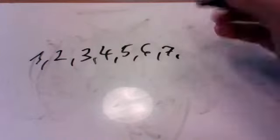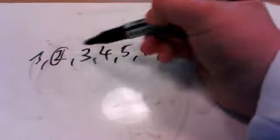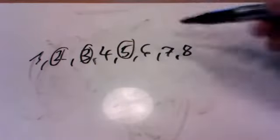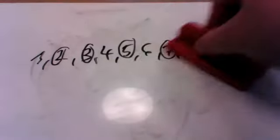So, prime numbers are those numbers where you just can divide them by itself. So, two is one, three is one, five is one, and seven is one. So, that's it for prime numbers.